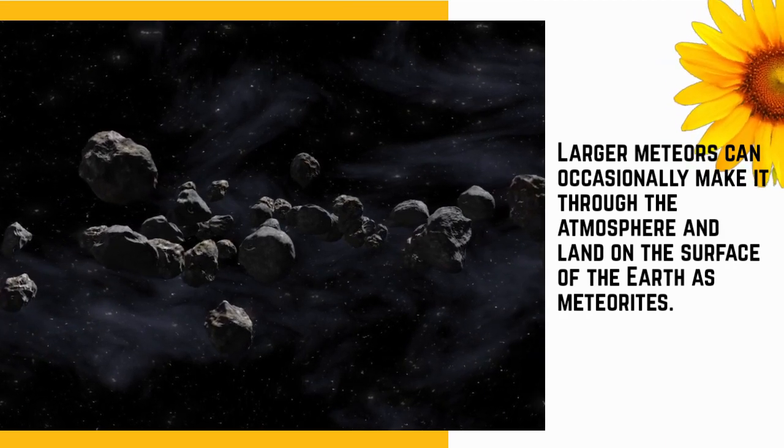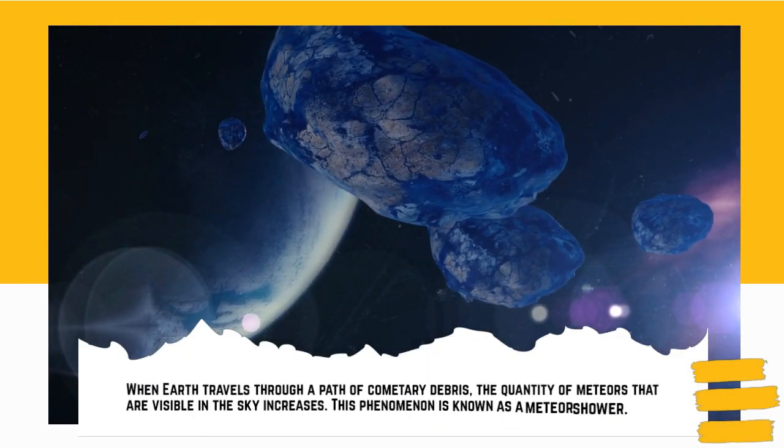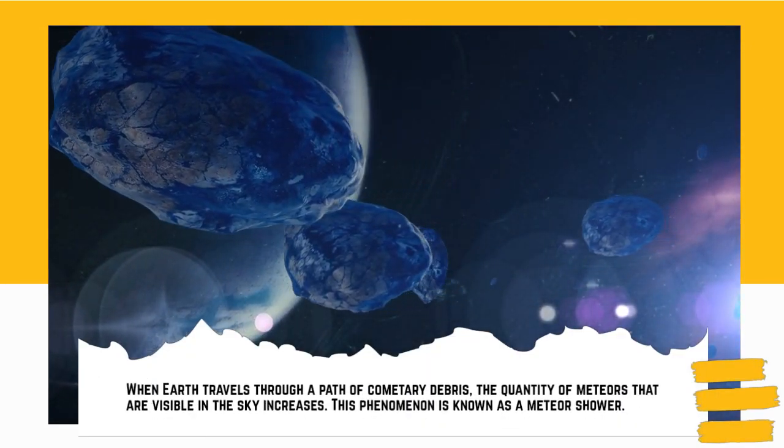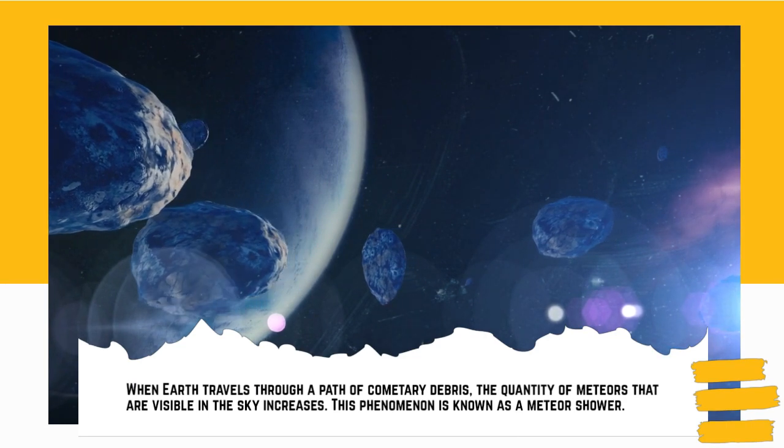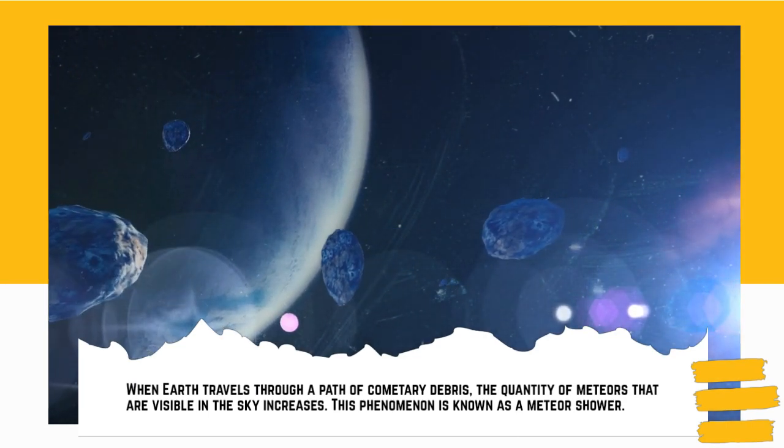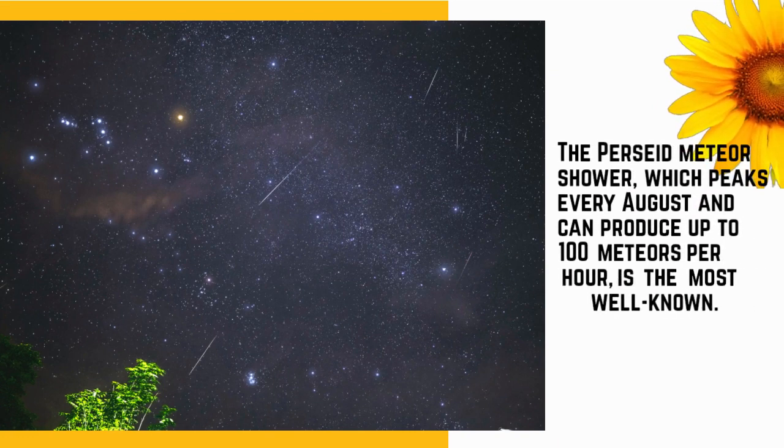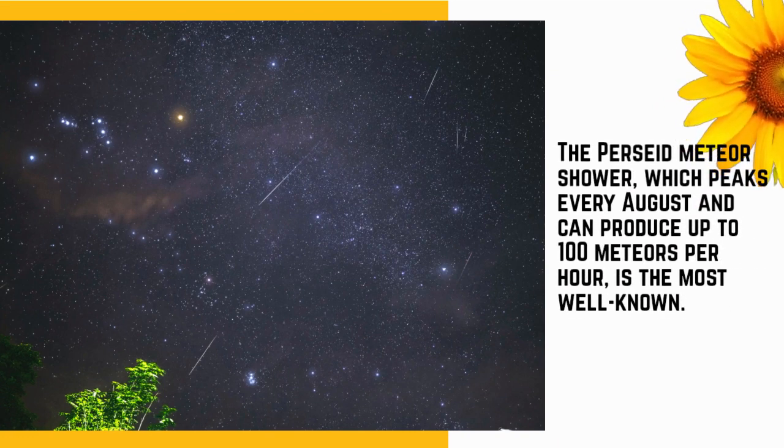When Earth travels through a path of cometary debris, the quantity of meteors that are visible in the sky increases. This phenomenon is known as a meteor shower. The Perseid meteor shower, which peaks every August and can produce up to 100 meteors per hour, is the most well-known.